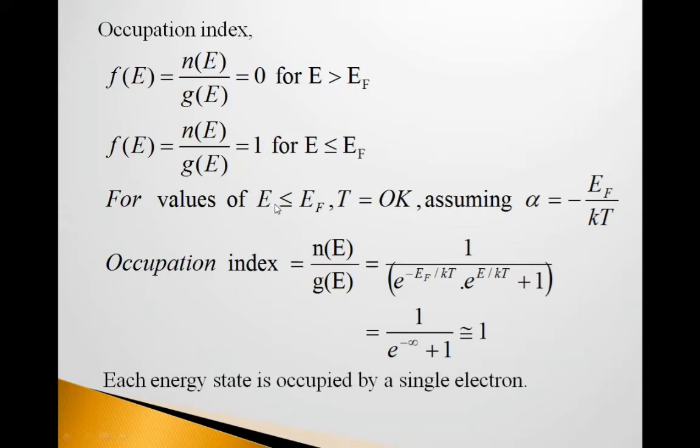So, for values of E less than equal to EF at temperature T equal to 0 Kelvin, assuming α equal to minus EF upon kT, occupation index is given by n(E) upon g(E) equal to 1 upon e raised to minus EF upon kT into e raised to E upon kT plus 1. This is equal to 1 upon e raised to minus infinity. So, E minus EF upon kT, E is less than equal to EF, so it is negative term. This will give us 0, so 1 upon 1 approximately equal to 1. Each energy state is occupied by single electron.